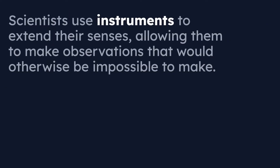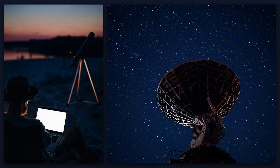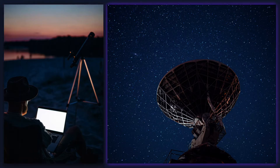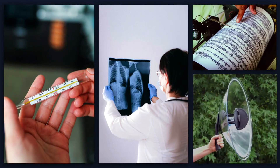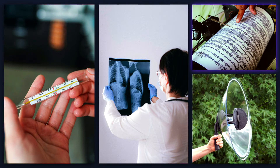It's important to note that scientists will use instruments to extend those senses, allowing them to make observations that would otherwise be impossible. For example, we can see pretty far with our eyes, but scientists use telescopes to see even further. An optical telescope lets you extend your sense of sight, while a radio telescope allows us to collect observations about space using senses that we don't have but the technology does. Using instruments can extend our senses and allow us to gather more detailed observations. Other examples include thermometers, x-ray machines, seismographs, and parabolic microphones.